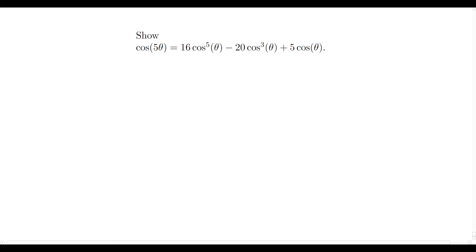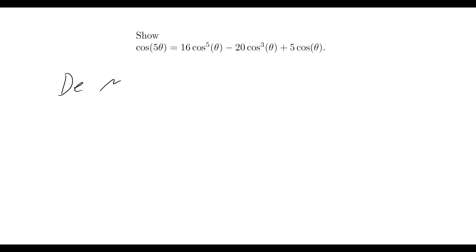The other day I saw this very interesting result that cos(5θ) is equal to 16cos⁵θ minus 20cos³θ plus 5cosθ. I sat there wondering for a while how we got to this result, until I realized that this is simply from an application of de Moivre's theorem.